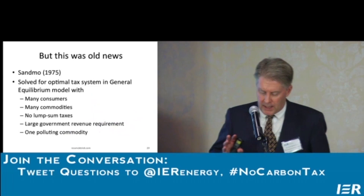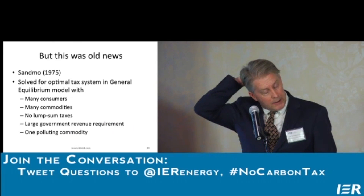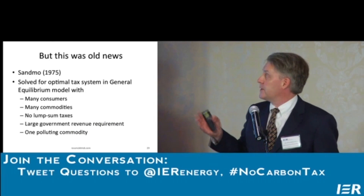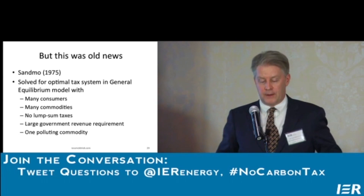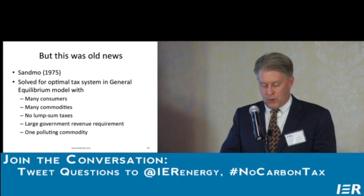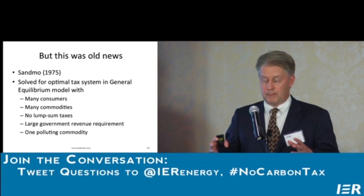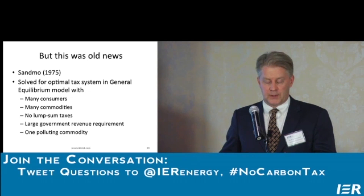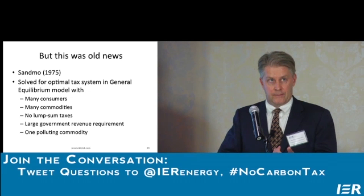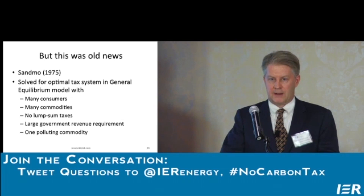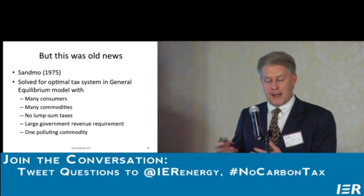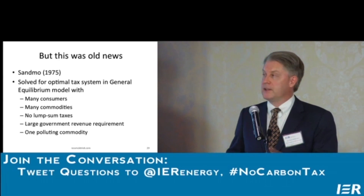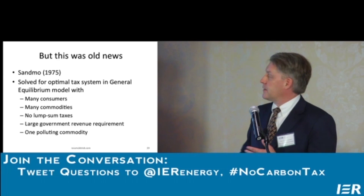Late in the 1990s, someone noted in a comment in the American Economic Review that this analysis was actually reinventing the wheel. It had all been worked through back in the 1970s by Swedish economist Egnar Sandmo, in a little-known article in the Swedish Journal of Economics. He asked: suppose we have a general equilibrium model and solve for the optimal tax system, where the government must raise revenue but cannot use lump sum taxes — only ad valorem taxes on prices — and one of those goods generates a pollution externality. What would the optimal tax system look like?